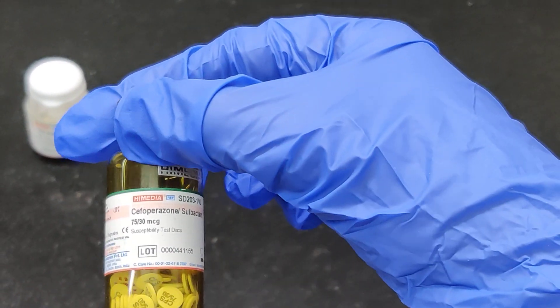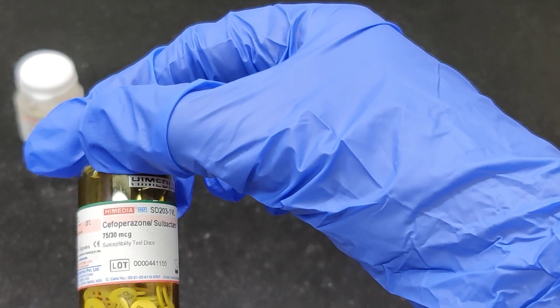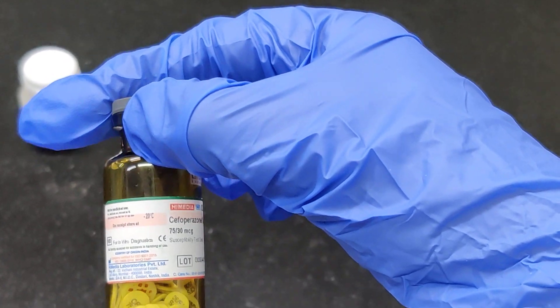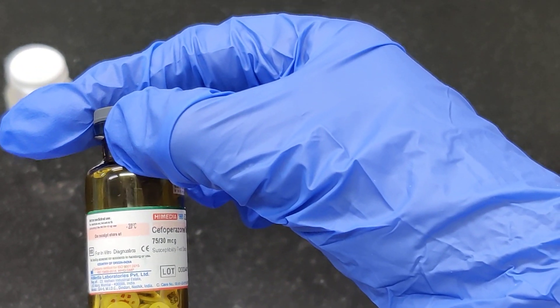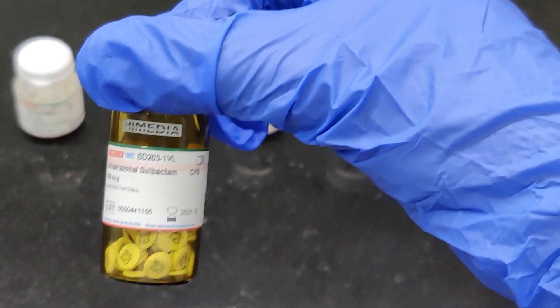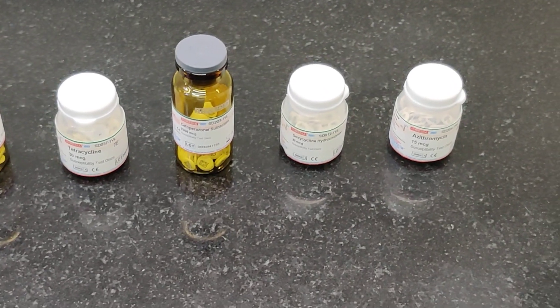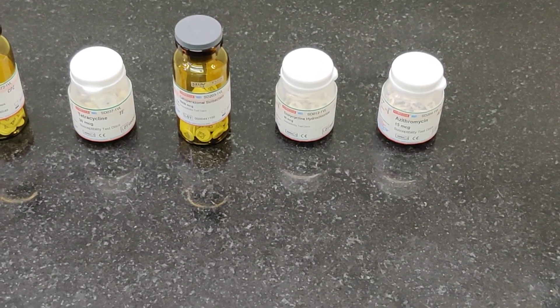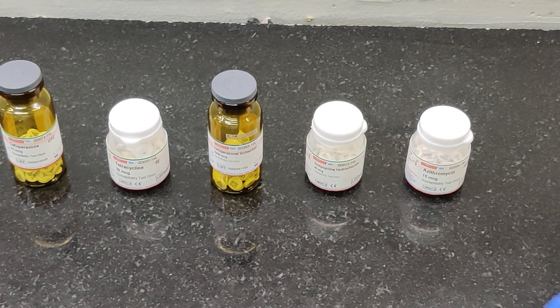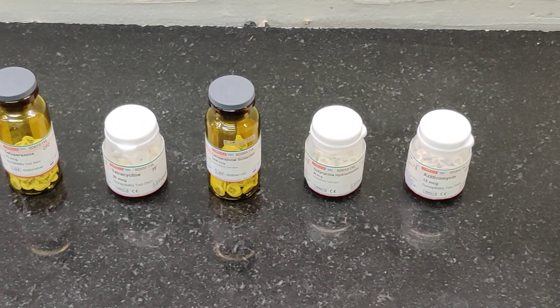Once these discs are purchased, they have to be stored at minus 20 degrees Celsius, but the working stock can be kept at 2 to 8 degrees Celsius. We are going to refrigerate these discs when we buy them, and it's very important that for the daily purpose of AST procedure by the disc diffusion test, you have to get these discs out of the refrigerator at least one hour prior to carrying out the disc diffusion method.